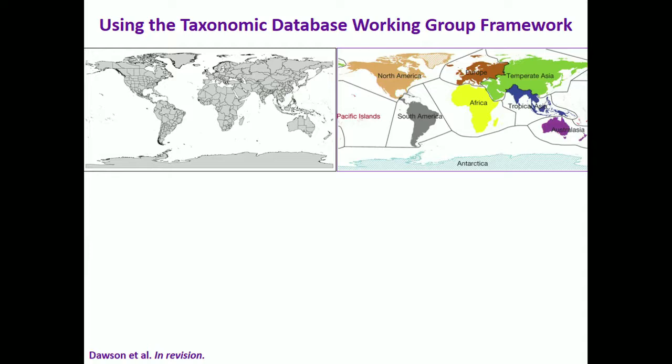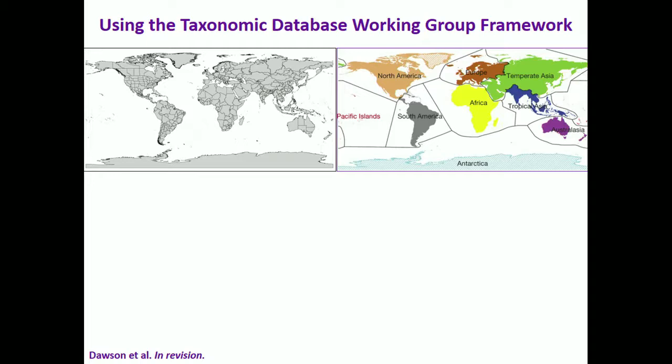Because species richness data from these different datasets is at different spatial scales, I've used the TDWG framework of 609 geopolitical regions, nested within 52 subcontinental and then 9 continental regions, as a common framework for looking at regional species richness.